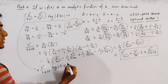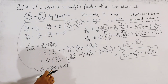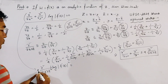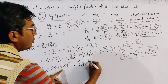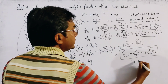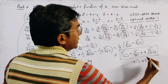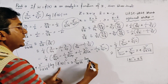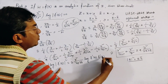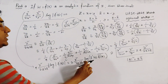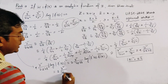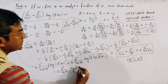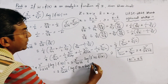We write |f'(z)|² = f'(z) · conj(f'(z)), so log|f'(z)| = (1/2)log|f'(z)|². The expression becomes 2 · ∂²/∂z∂z̄ of log(f'(z) · conj(f'(z))). Using the property log(ab) = log a + log b, we get 2 · ∂²/∂z∂z̄ [log f'(z) + log(conj(f'(z)))].